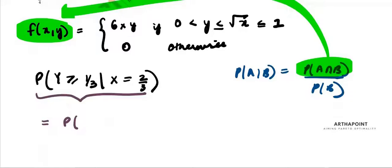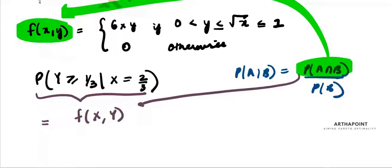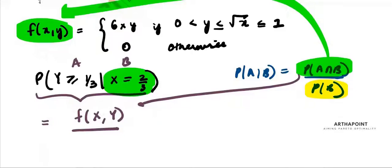I can write this in terms of probability density — the joint probability density function. I have to divide it by the probability of B. Here B is the event X = 2/3. How do we go from a joint density function to finding the probability of B? By finding the marginal function.